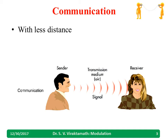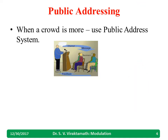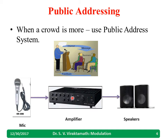When we want to talk to somebody and the distance is very less, I can simply talk through the transmission media and the person will receive. The signal will go through and the receiver will get the information. When there is a crowd, I usually use a public address system — a mic — it will be amplified and given to the speaker so that all receivers will receive.